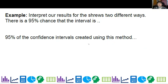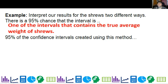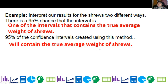So let's go ahead and look at some ways to interpret it. There's a 95% chance that the interval is one of the intervals that contains the true average weight of shrews or 95% of the confidence intervals created using this method will contain the true average weight of shrews. So that's how we tend to word these.